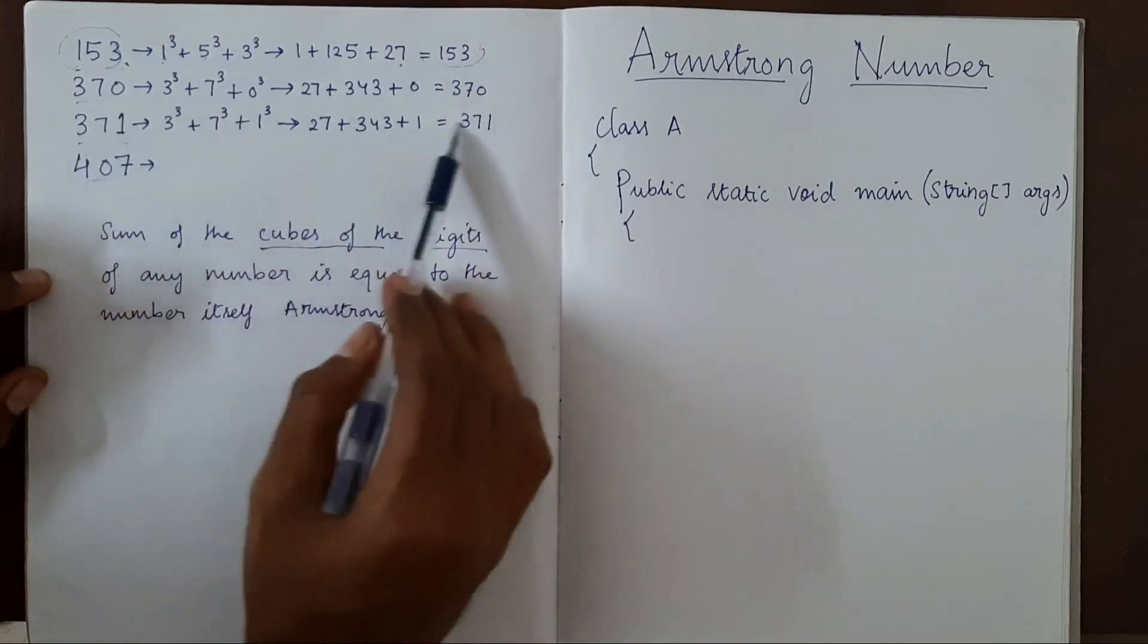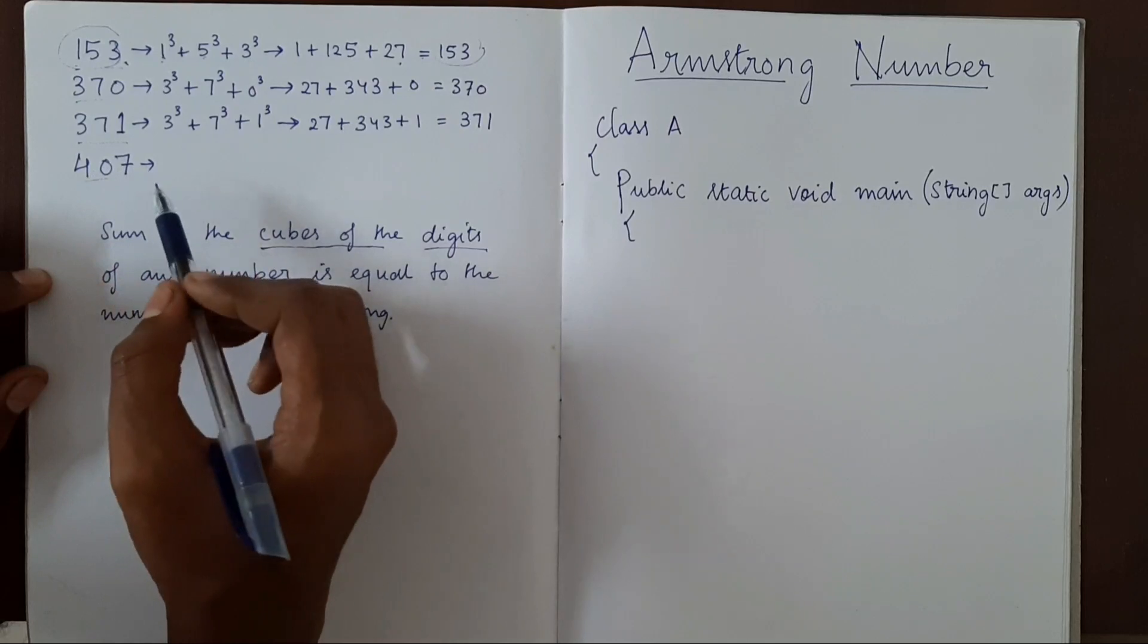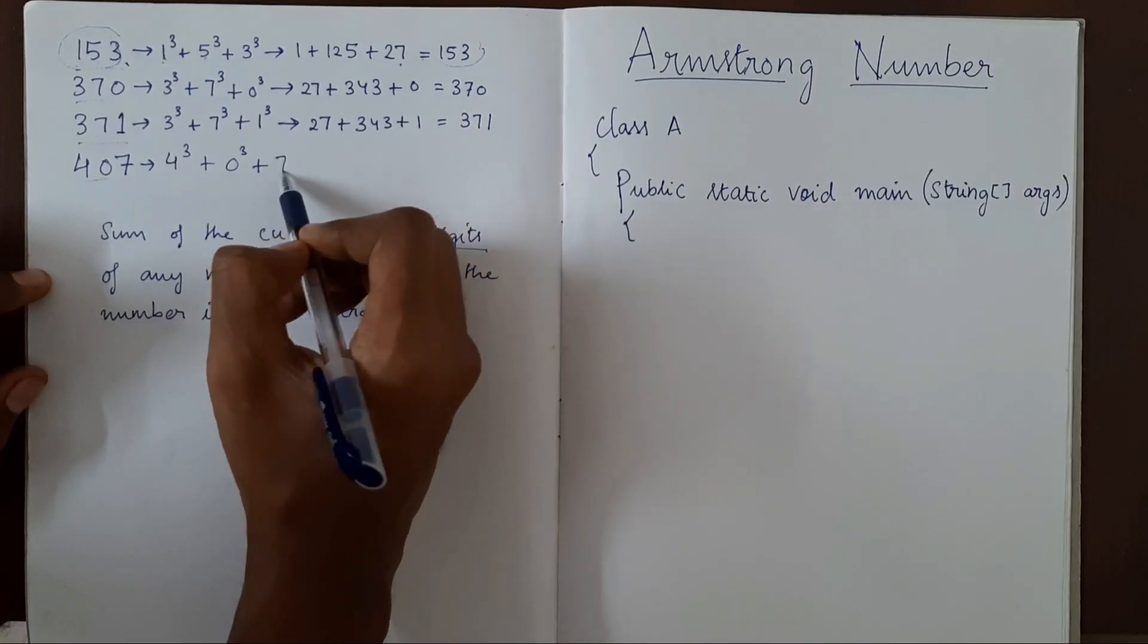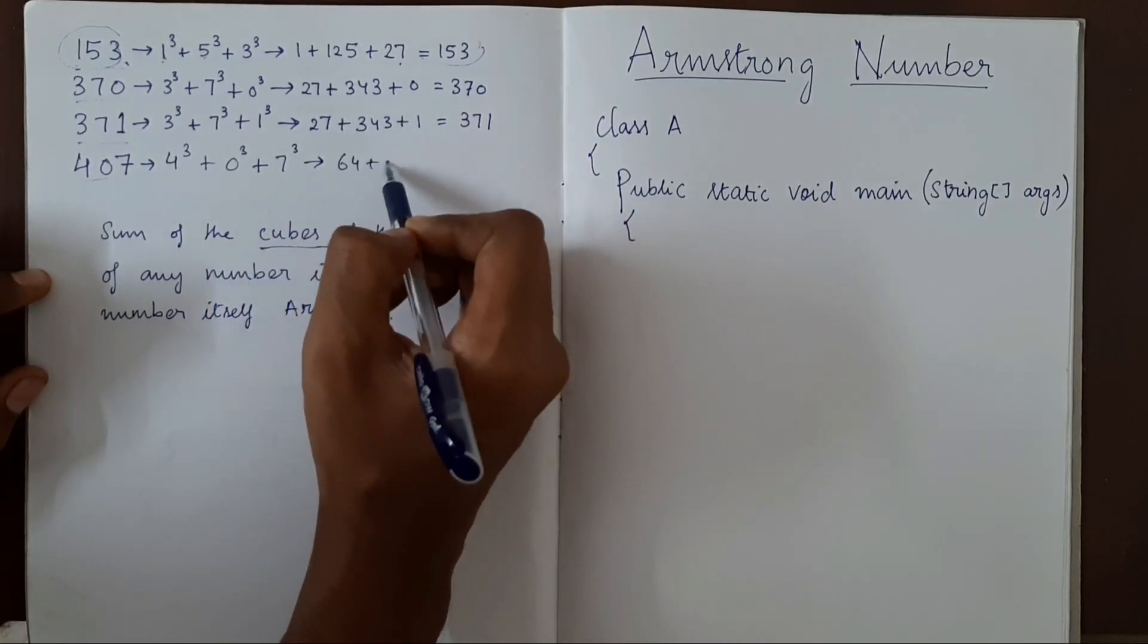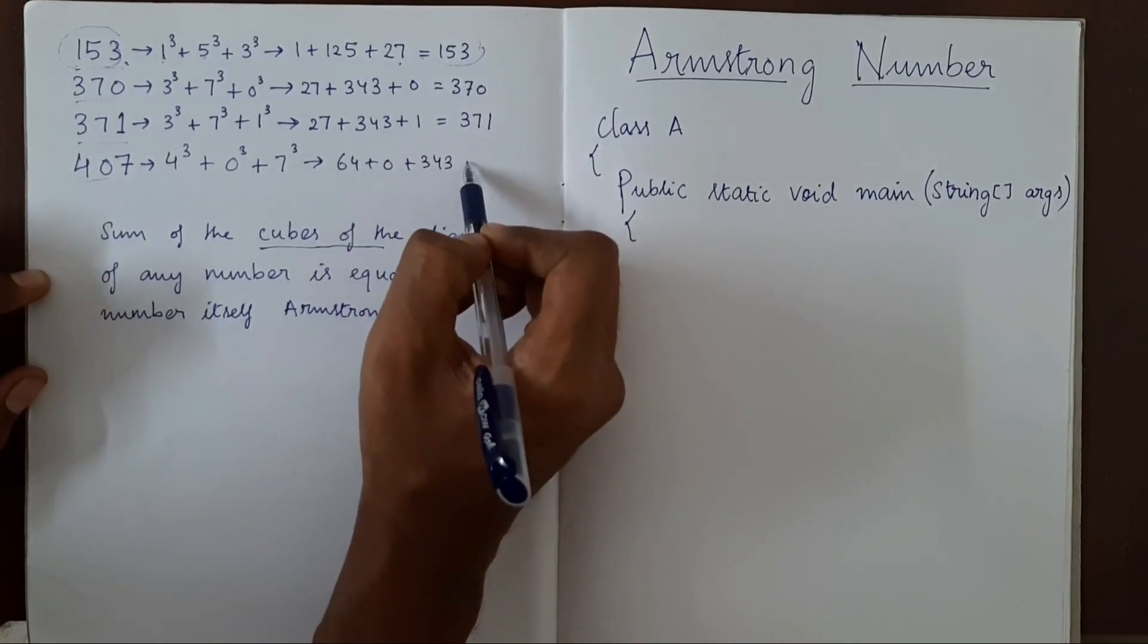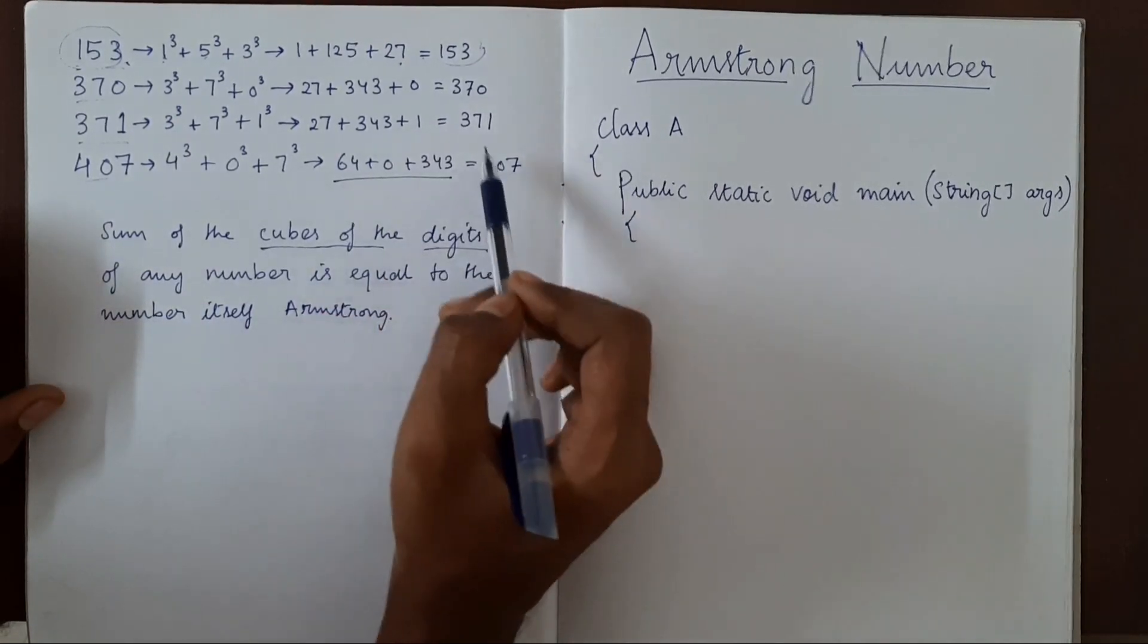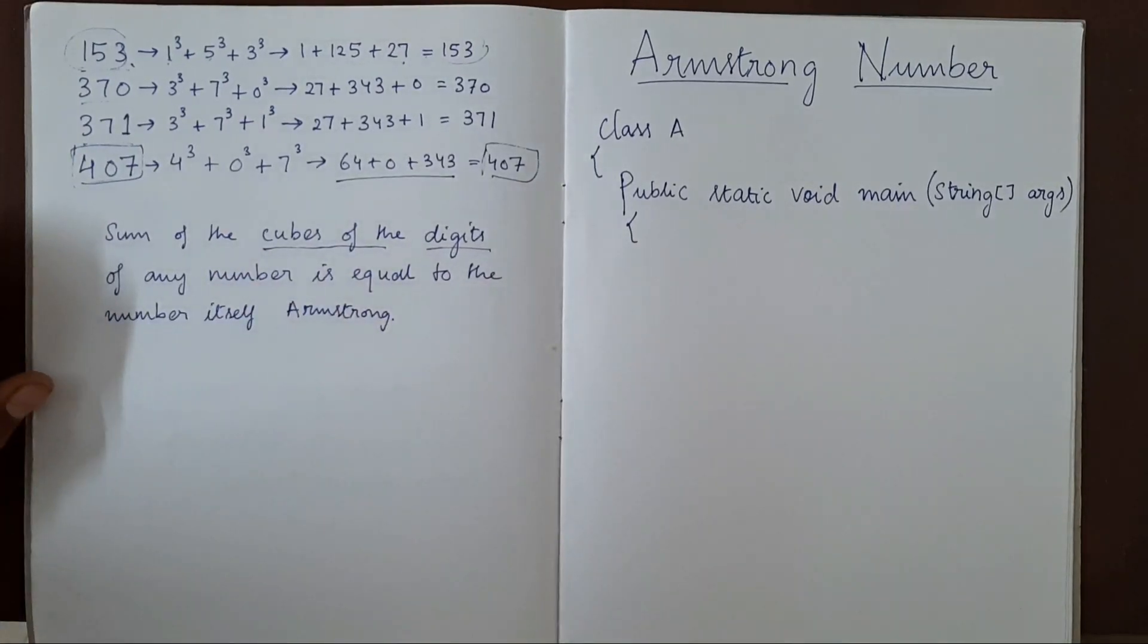Similarly, all these numbers follow the same criteria and that's why they are Armstrong numbers. Let's see 407. 4 cube plus 0 cube plus 7 cube, that will be 64 plus 0 plus 343, which equals 407. So the sum of the cubes of the digits is equal to the original number. These are Armstrong numbers.